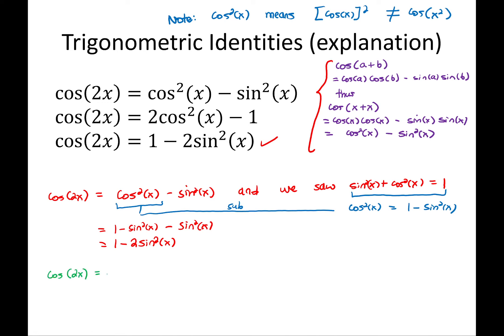Cos of 2x is equal to cos squared x minus sine squared x. And we saw that sine squared x plus cos squared x is equal to 1. This time, I'm going to rearrange and get sine squared x all by itself. Sine squared x is equal to 1 minus cos squared x. So we can do that rearranging instead and substitute out this sine squared.